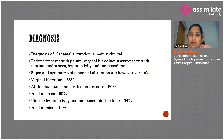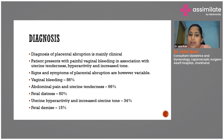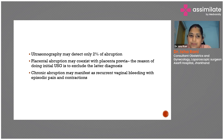Diagnosis is mainly clinical. The patient will present with painful vaginal bleeding associated with uterine tenderness, hyperactivity, and increased tone. Signs and symptoms vary: 86% present with vaginal bleeding, 66% with abdominal pain and uterine tenderness, 60% with fetal distress, 34% with uterine activity and increased uterine tone, and 15% with fetal demise.